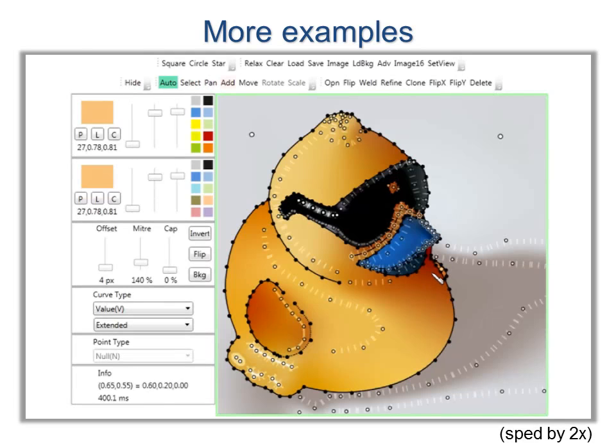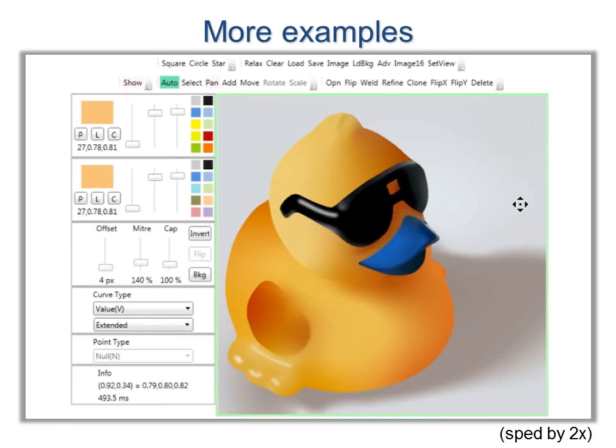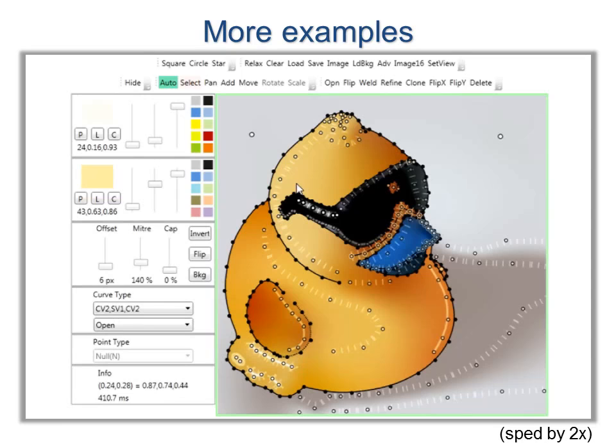Here, the user first draws a value curve to simulate lighting near the silhouette. Next, a few compound curves: crease value, slope value, crease value. These create highlights and further convey 3D shape.